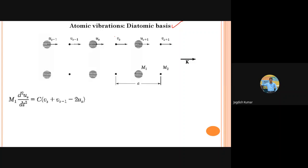Again, we will use Newtonian equations of motion. The notations of the previous article are retained here, but we have something new. Suppose u_s is now representing the displacement for the bigger atom or A-type atom, and v_s is representing the displacement for the second type of atom. So we have two types of displacements, u_s and v_s, and accordingly we have two equations of motion. This is one equation of motion — it is identical to that in the previous case, but here we have v_s, v_{s-1}, and u_s as well.